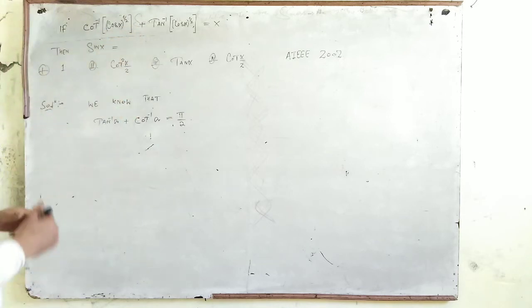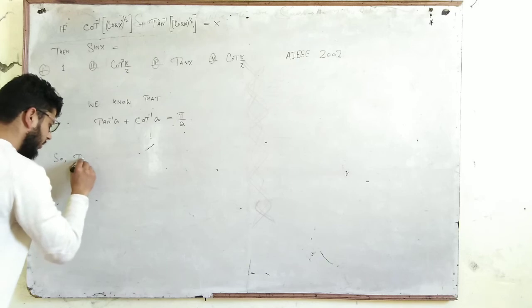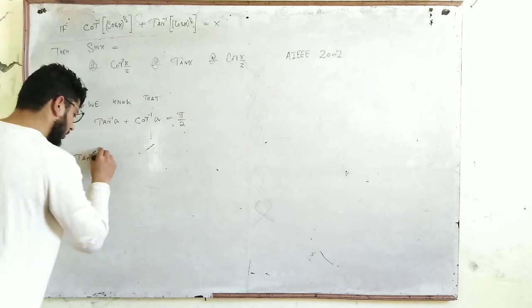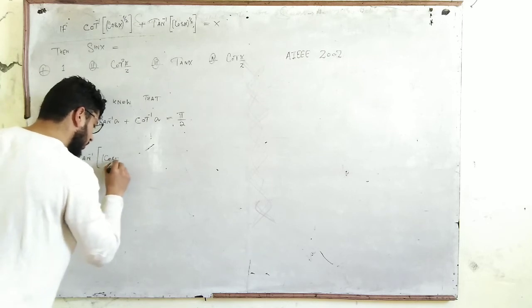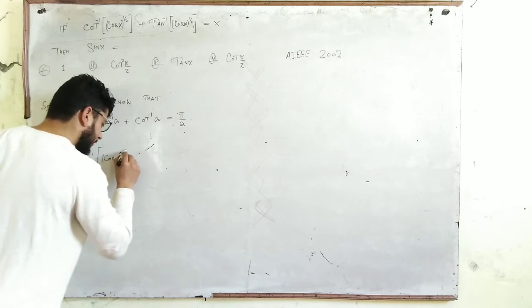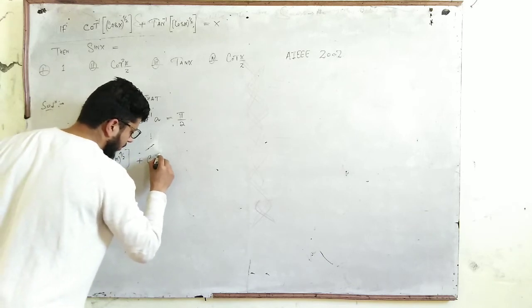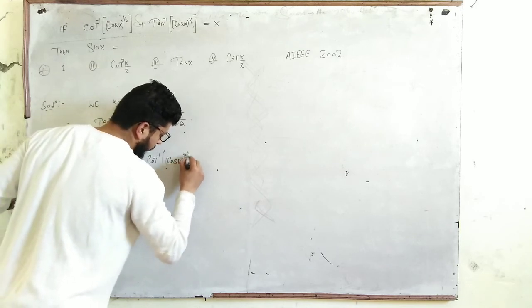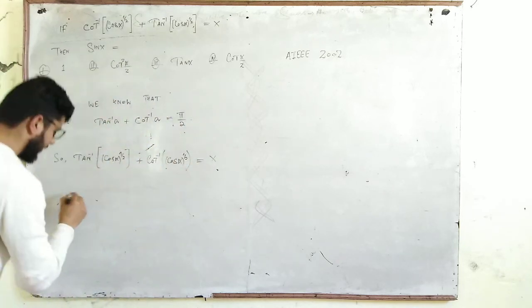We can directly write: tangent inverse of cosine alpha to the power 1/2 plus cotangent inverse of cosine alpha to the power 1/2 equals x. Now, by applying this identity...